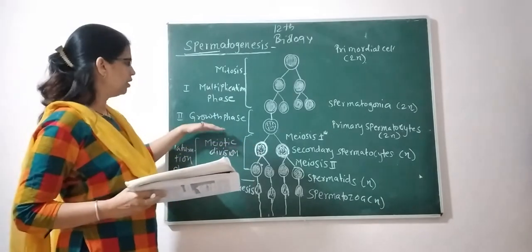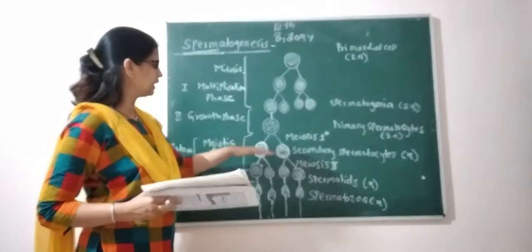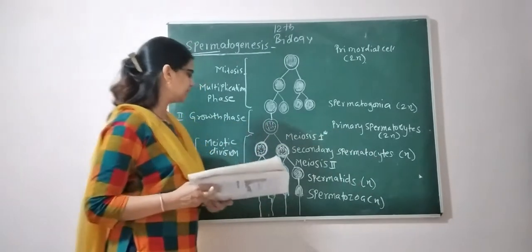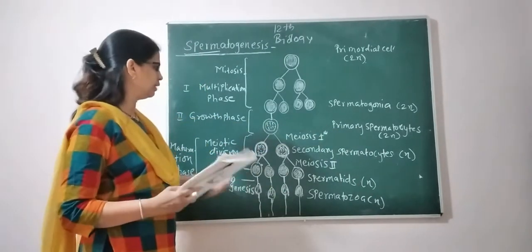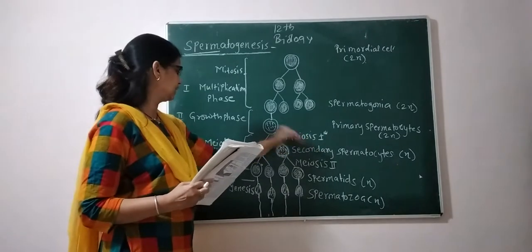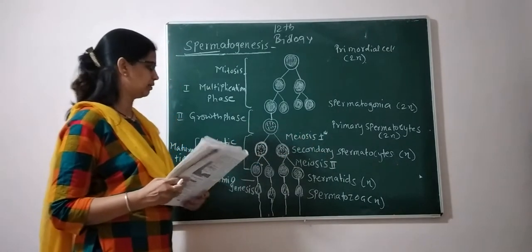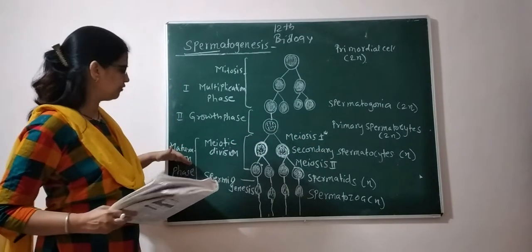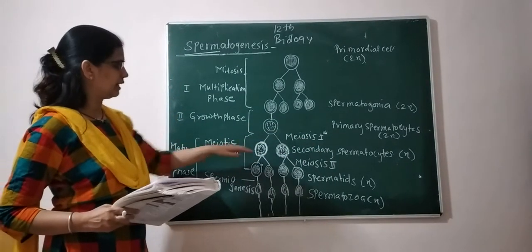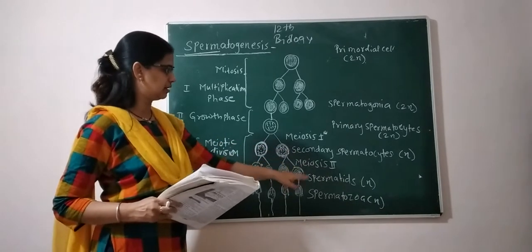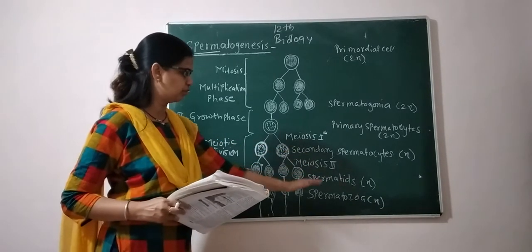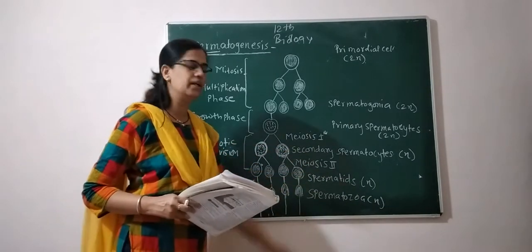In the multiplication phase, primordial cells develop into spermatogonia. In the growth phase, primary spermatocytes are formed. In the maturation phase, involving meiosis, secondary spermatocytes and then spermatids are produced, ultimately forming spermatozoa.